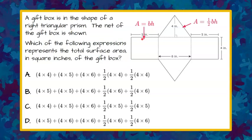So here we go. We have a rectangle that is five by four, so four times five, and then this one is the same. And then over here we have four — this length is four.